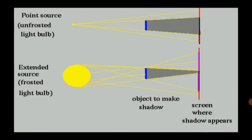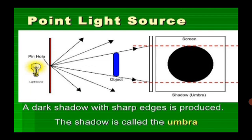The shadow obtained from a point light source: a dark shadow with a sharp edge is produced. The shadow is called the umbra.